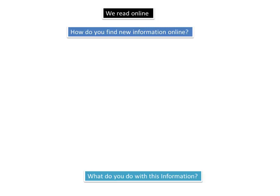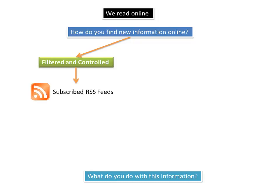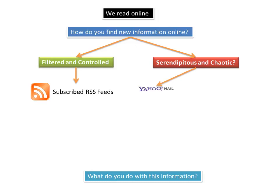The first step to think about is how do you actually find this information? Hopefully, some of the information that you find is in a controlled and filtered manner, like for example, reading RSS feeds that you subscribe to. More than likely, at least a part of your discovery process will be accidental and chaotic, like people sending you links to web pages in your email, or you surfing the web and stumbling upon web pages, or friends sharing information with you on social networks.